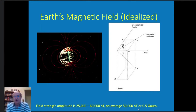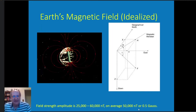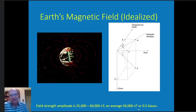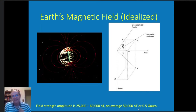There is an east component and an up-down component. The field strength amplitude is about 25,000 to 60,000 nanoteslas; on average it's about 50,000 nanoteslas, or half a gauss. We work in nanoteslas in my field because those are the kind of variations we see.